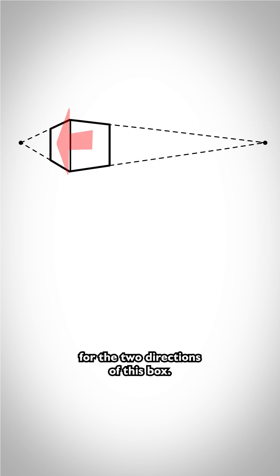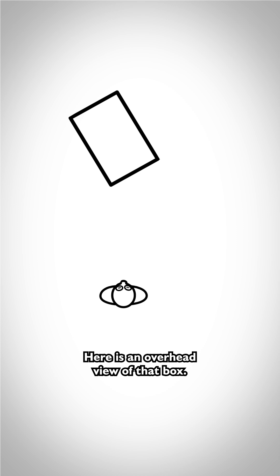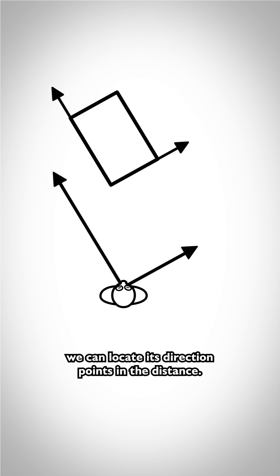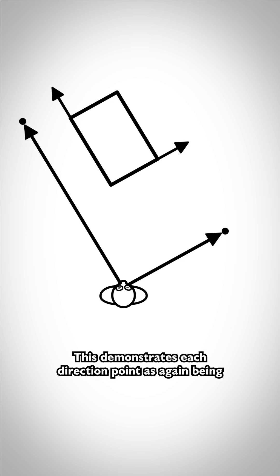Two direction points are used for the two directions of this box. Here is an overhead view of that box. Looking in the same directions as the box, we can locate its direction points in the distance. This demonstrates each direction point as again being that direction of a form away from our viewpoint.